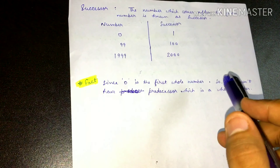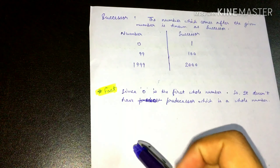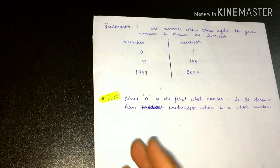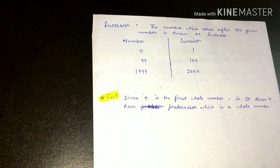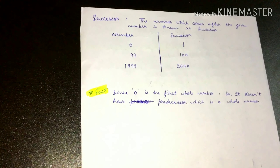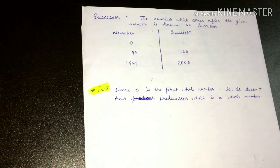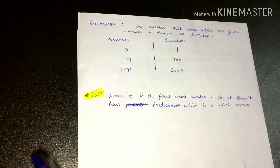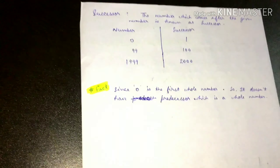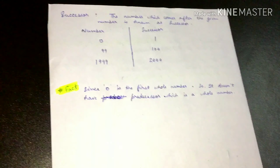Okay, so there is one fact: since 0 is the first whole number, it doesn't have any predecessor. 0 hamara first number hai, usse pehle koi number nahi hai, isliye uska koi predecessor nahi ho sakta. Lekin successor ho sakta hai — uska successor obviously 1 hoga.